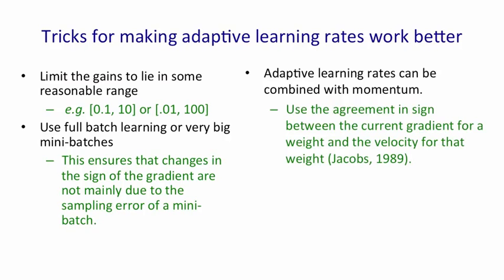There's nothing to prevent you combining adaptive learning rates with momentum. Jacobs suggests that instead of using the agreement in sign between the current gradient and the previous gradient, use the agreement in sign between the current gradient and the velocity for that weight, so the accumulated gradient. If you do that, you get a nice combination of the advantages of momentum and the advantages of adaptive learning rates.